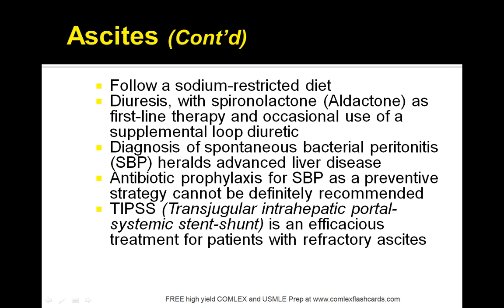Antibiotic prophylaxis should be given. And in some patients, transjugular intra-hepatic portal systemic stent shunt (TIPS) is efficacious for refractory ascites.